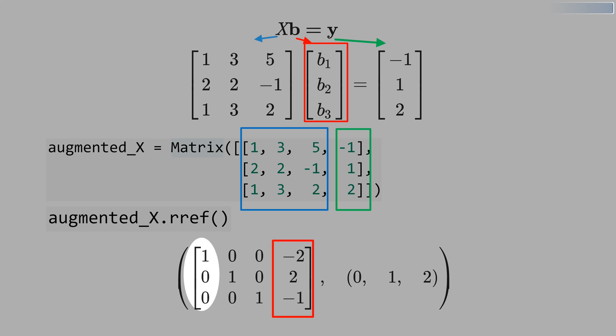Python starts counting from 0. This is column 0, column 1, column 2, and column 3. You don't see the number 3 here, because column 3 is a linear combination of the other columns.